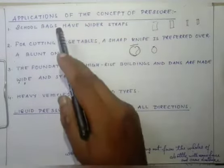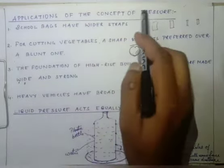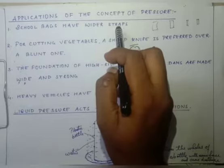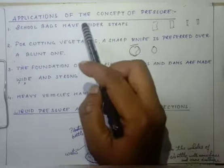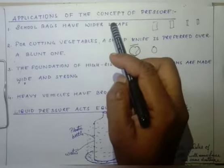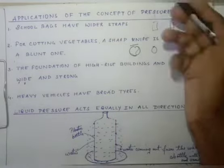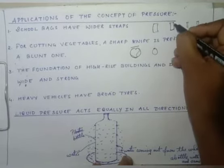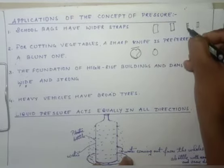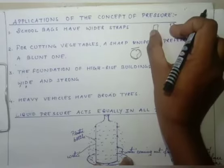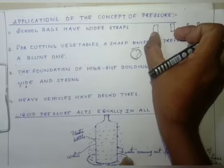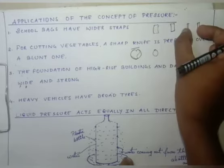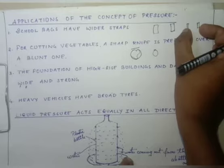Let us continue with the applications of the concept of pressure. The first application: school bags have wider straps because wider straps distribute the force throughout a greater surface area, which reduces the pressure on the shoulder. Here you can see a wider strap covers more area so pressure is less, and a thinner strap covers less area so pressure is more. That is why the straps of bags are broader.